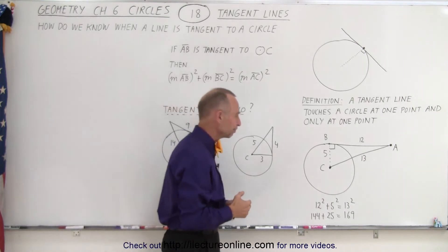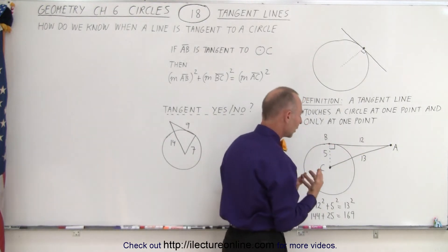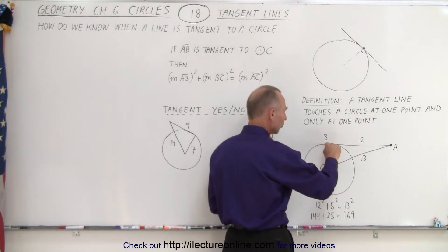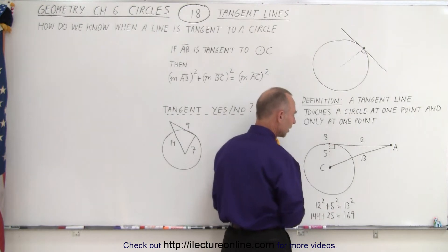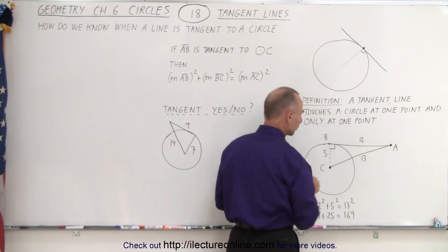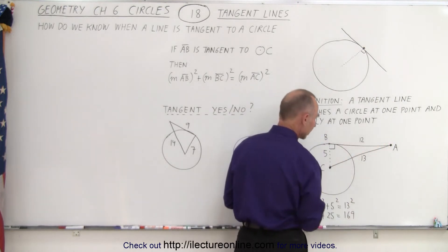So here we have an example. Let's say we have a circle, and here we have a line from A to B, so how do we know that it's tangent? Well, it turns out that if we measure the distance from where it touches the circle to the center, let's say that's equal to 5, and then we measure the distance from the center to the end of the line over here, let's say that's 13, and then we measure the distance from B where it touches the circle down to where the end of the line is, let's say that's 12.